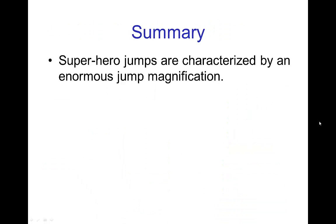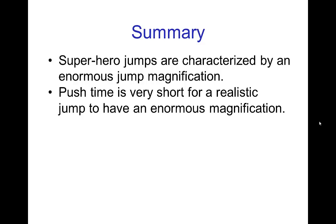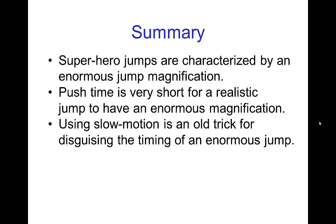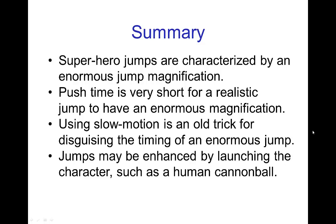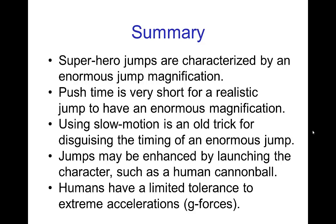In summary, superhero jumps are characterized by an enormous jump magnification, and the push time is very short for a realistic jump to achieve that. Using slow motion is an old trick for disguising the timing of an enormous jump — though it's not used as much anymore because it became somewhat stylized, it's still useful from time to time. Jumps may be enhanced by launching a character, as with the human cannonball, but there are limits because humans have a limited tolerance for extreme accelerations, sometimes called g-forces.